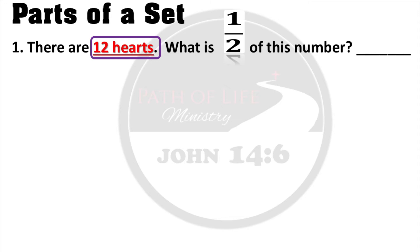At this point, you must use the fraction and the whole number to formulate a number sentence. You write: one half of 12 equals — and we don't know yet, which is why we put a question mark. We are in the process of finding out.